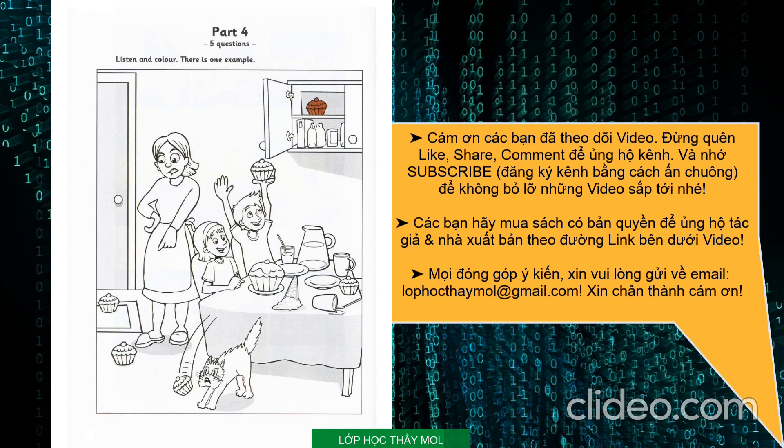2. And there's a small girl at the table with short hair. Can you see her? Yes. She's got a big cake. Yes. Can you colour the girl's cake yellow, please? OK, then.